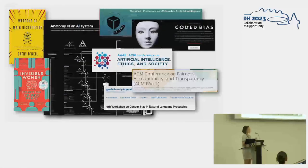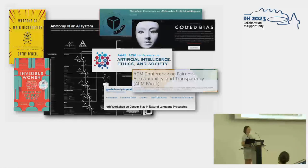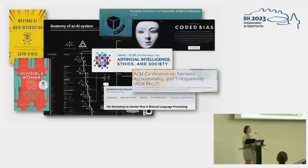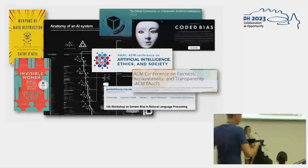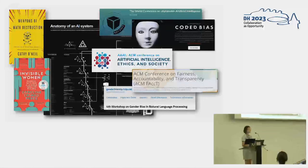In response to some of these harms being surfaced as these technologies have become more widely used, there's been an explosion of research in the computational sciences about bias and fairness. You have conferences like the Conference on Fairness, Accountability and Transparency, and workshops on gender bias in natural language processing. There's also been growing public awareness thanks to books like 'Weapons of Math Destruction' and documentaries like 'Coded Bias.' But even with all this work and attention, there has still been quite limited progress on meaningfully mitigating these harms.